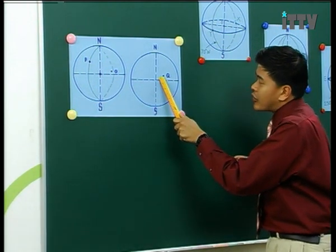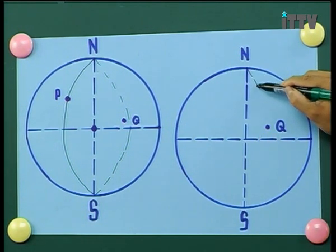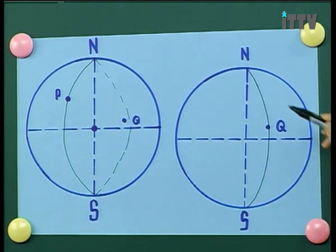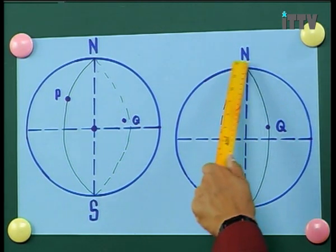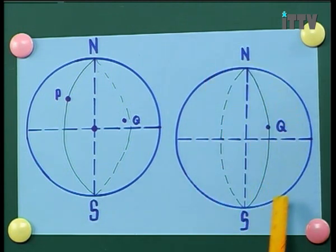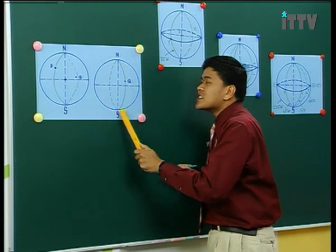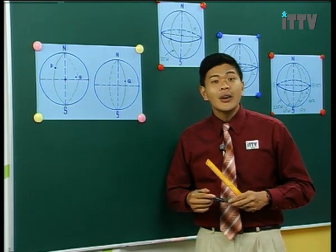Now for point Q: start from the north pole, draw a solid line passing through Q all the way to the south pole. The other half at the back must be drawn using dotted lines. So the great circle is a three-dimensional object — solid lines for the visible half, dotted lines for the hidden half. Remember: any meridian forms a great circle, and only the equator is a latitude that is also a great circle.